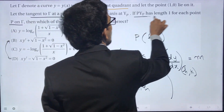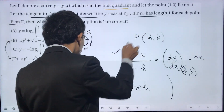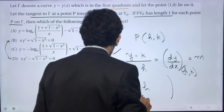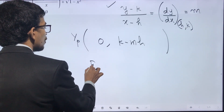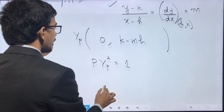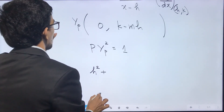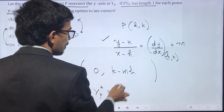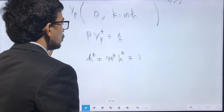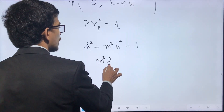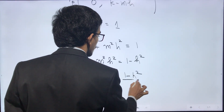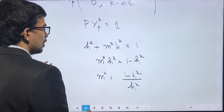The condition is that PYp always has length one. Using the distance formula, PYp² = 1. So h² + (k − (k − mh))² = 1, which gives h² + m²h² = 1, therefore m²h² = 1 − h².